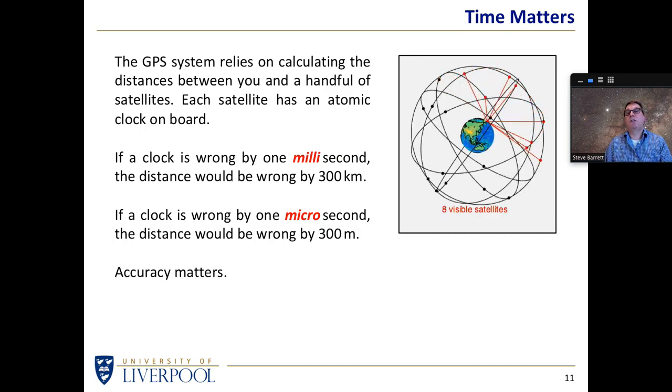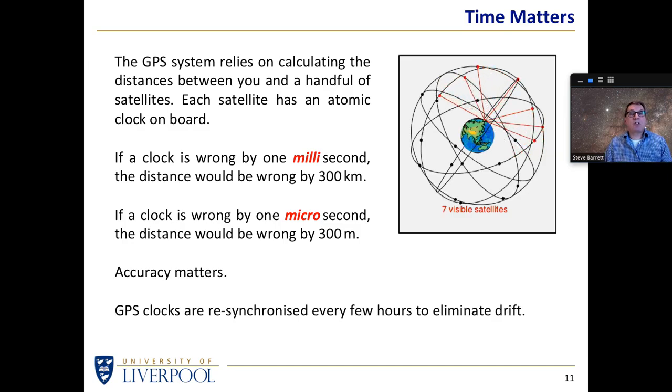So we need accuracy of GPS clocks that are good to billionths of a second if we want the sort of accuracy we expect from a GPS system to tell us where we are on earth to an accuracy of a few meters. Accuracy does matter. GPS clocks can't be allowed to drift too far, and they are resynchronized as often as possible, every few hours to keep the system ticking over nicely.